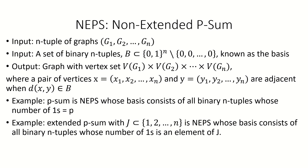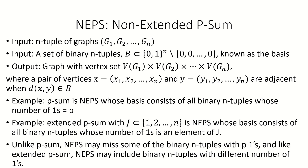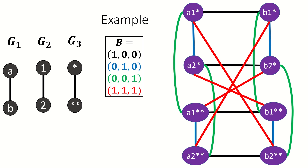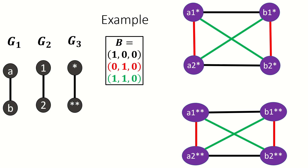This shows that all p-sums and extended p-sums are special cases of the NEPS. Now unlike the p-sum, an NEPS is allowed to not include all binary n-tuples with a certain number of 1s. As an example, if these are our input graphs and we have this basis, then our result is a graph that's missing the edges of the 2-sum, but has all of the edges of the 1-sum — edges between vertices that have one adjacent coordinate and the rest equal — as well as all of the edges of the 3-sum — edges between vertices that have all coordinates adjacent. As another example, here's an NEPS that is missing some edges from the 1-sum and 2-sum and missing all of the edges from the 3-sum.